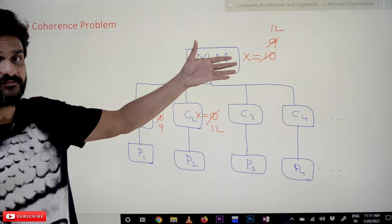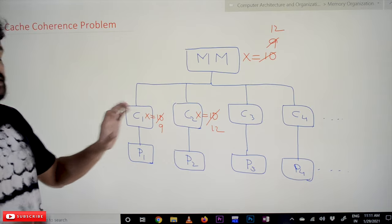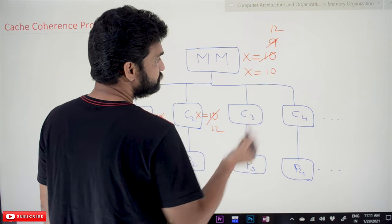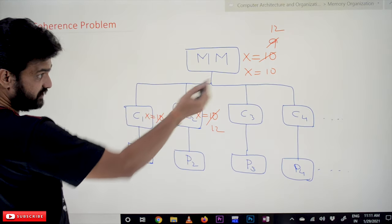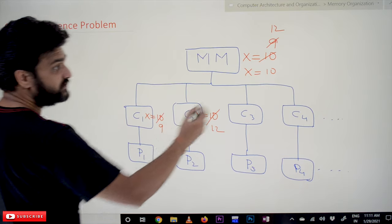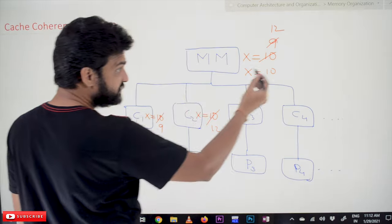But what should the value of X actually be? What the value of X should be if it is done properly? Initially, the value of X is 10. C1 has accessed that value and it has made some changes on that value.